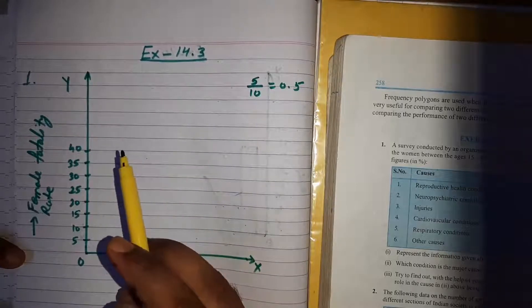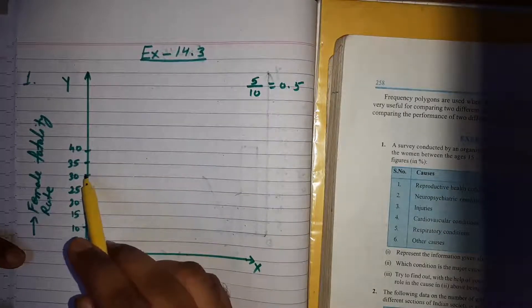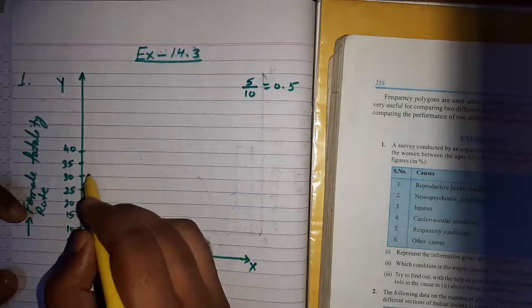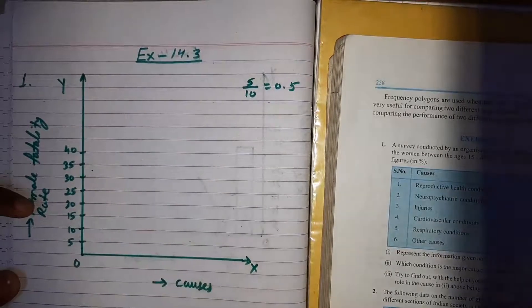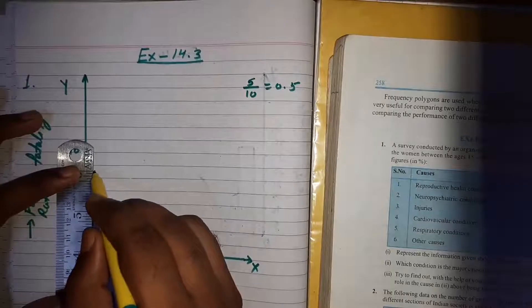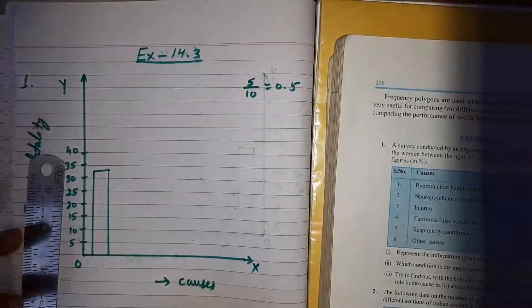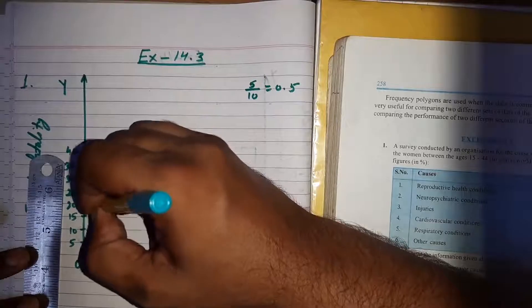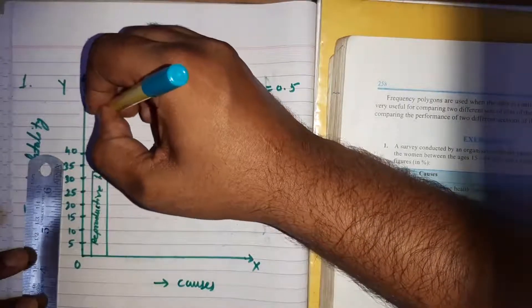We represent reproductive health condition by drawing a rectangle bar up to the 4th line between 30 and 35, which is nearly equal to 31.8. This bar represents reproductive health condition.